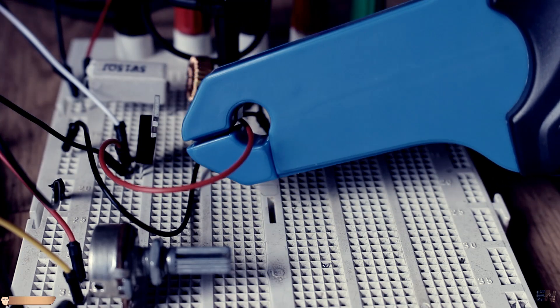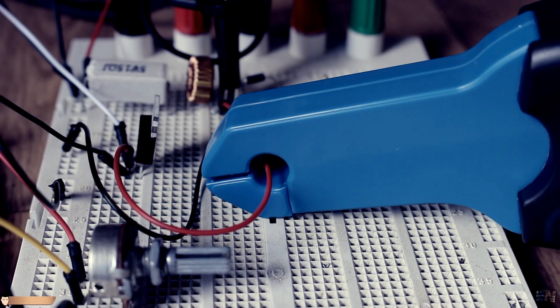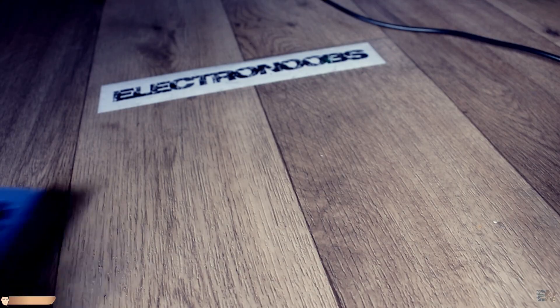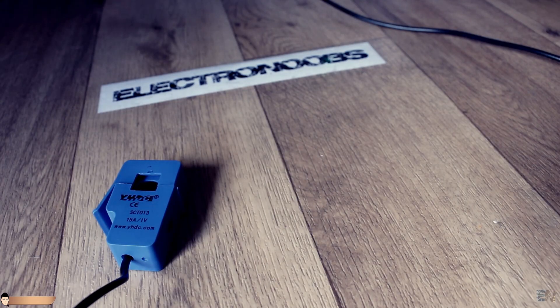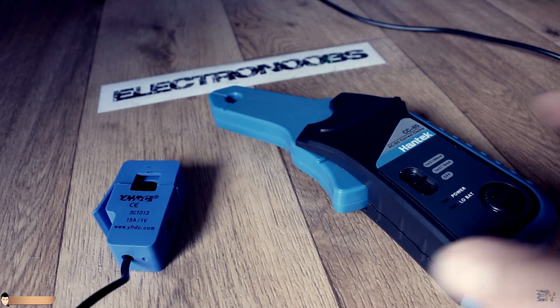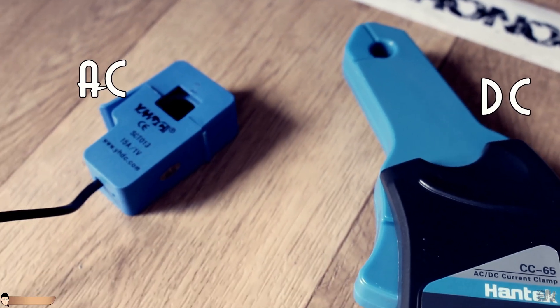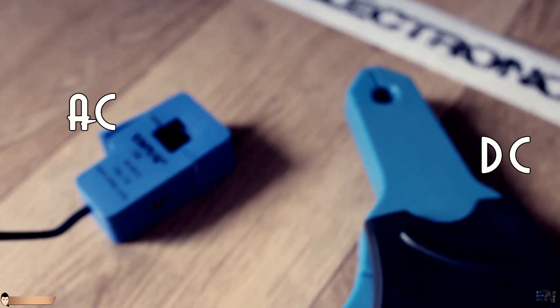A current probe is simply clamped over the current-carrying wire, and the circuit doesn't have to be open, which is a huge advantage. So current probes are divided into two types, AC and DC current clamps. I will try to explain how both of these types work.